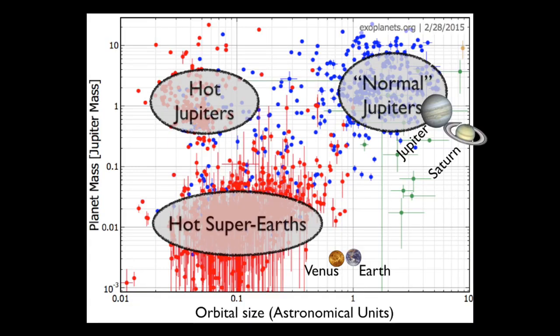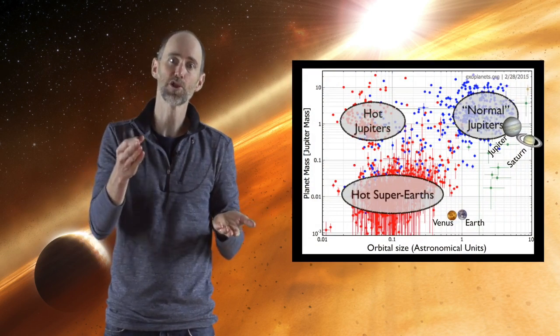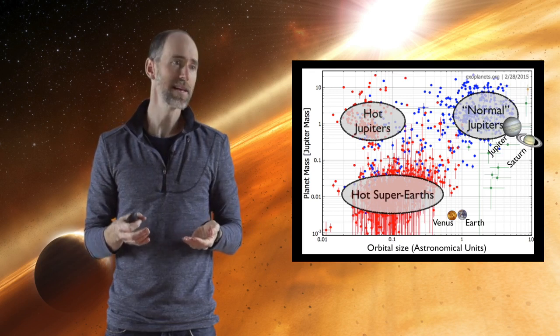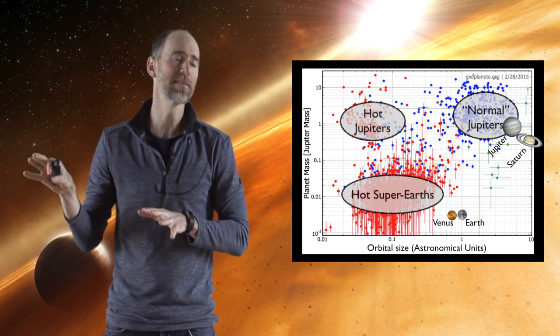There are clumps of hot Jupiters, more normal Jupiters, and super-Earths. First of all, you can see that the planets within our own solar system - Venus, Earth, Jupiter, and Saturn - lie mostly outside of these clumps. We can't find planets just like Venus or Earth yet.